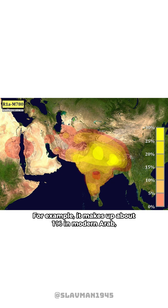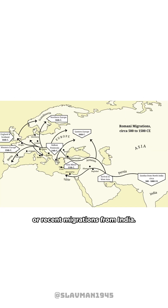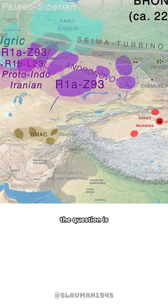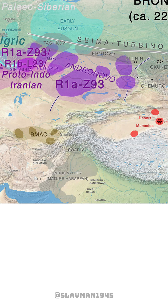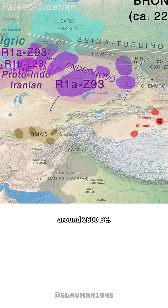Y3 plus makes up about 1% in modern Arab, Middle Eastern, and Eastern European populations, which is likely due to Romani or recent migrations from India. While its ancestor clade Z93 is clearly of steppe origins, the question is: where did the Y3 plus subclade itself originate? The most likely explanation is that it emerged from a single individual living in India around 2600 BC whose paternal ancestry traces back to the steppe.